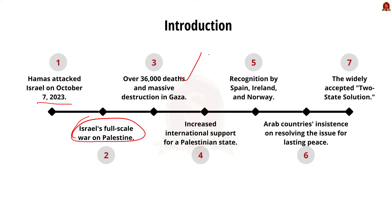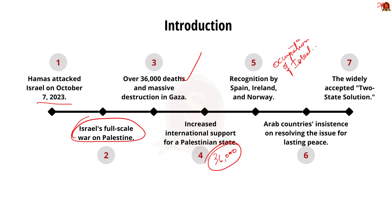Hamas attacked Israel on October 7, 2023, and Israel retaliated with a full-scale war on Palestine. The ongoing war on Gaza has brought attention back to the issue of Palestine, causing massive destruction and resulting in more than 36,000 deaths. Many countries are now expressing strong support for the creation of a Palestine state. Recently Spain and Norway recognized Palestine as a state. Arab countries like Saudi Arabia and Jordan insist that there will be no lasting peace until the Palestine issue is resolved.